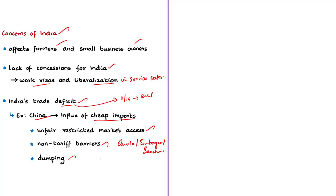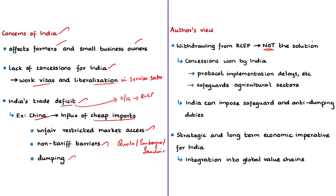According to the author, even though India has these concerns, withdrawing from RCEP is not the solution. India had already won concessions such as protocol implementation delays of WTO protocols, and also has safeguards to protect sensitive sectors like agriculture. The WTO has provisions which allow India to impose safeguard duties and anti-dumping duties, and these provisions are already being used by India against China. Instead of using these measures, India has withdrawn from RCEP, and the author is not okay with India's decision.